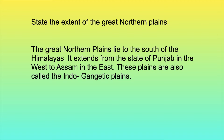State the extent of the great northern plains. The great northern plains lie to the south of the Himalayas. It extends from the state of Punjab in the west to Assam in the east. These plains are also called Indo-Gangetic plains.